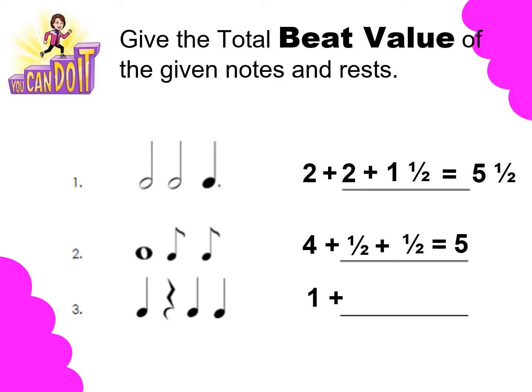Let us proceed to number 3. Number 3 has 4 musical symbols. The first musical symbol is a quarter note and the value is 1. So you have 1 plus 1 plus 1 plus 1 — the total beat value is 4.